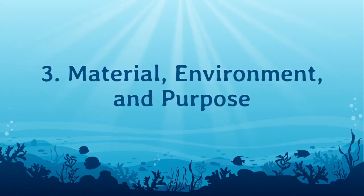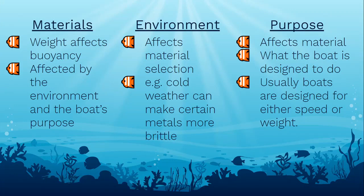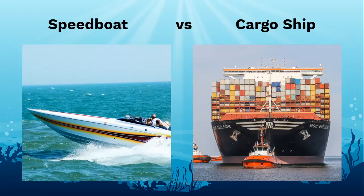The last three factors — material, environment, and purpose — are less physics-related and more practical, but still very important. When selecting materials for the boat, keep in mind the weight of the material because it will affect buoyancy. Material selection is also affected by surroundings and purpose — for example, cold weather can make certain metals more brittle, so ensure your material can handle the environment. The purpose of a boat is what it's designed to do; usually boats are designed for either speed or weight. A speedboat compared to a cargo ship is smaller, lighter, and more streamlined, while the cargo ship relies on its large volume for buoyancy.